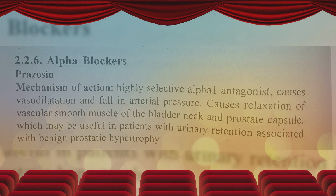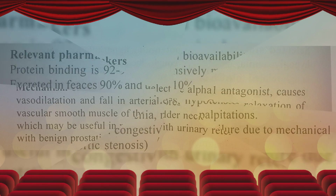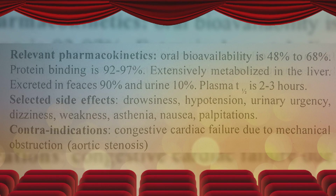This is how to use the Alpha-1 Selective Blockers. They can dilate blood vessels and relax smooth muscles. They can also relax the bladder neck, prostate gland, etc., as well as relax blood vessels.